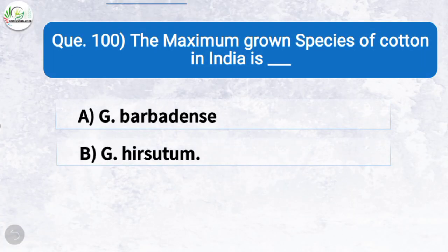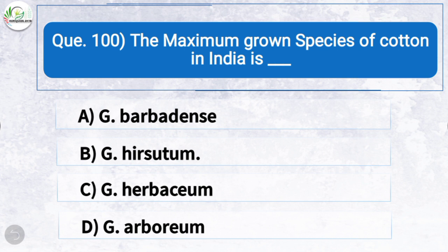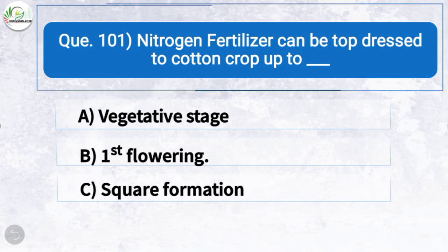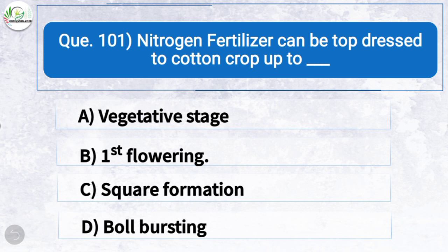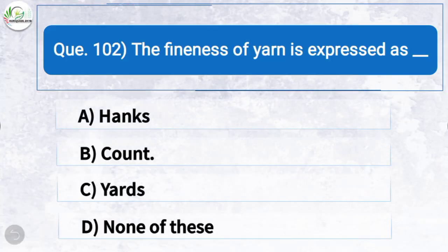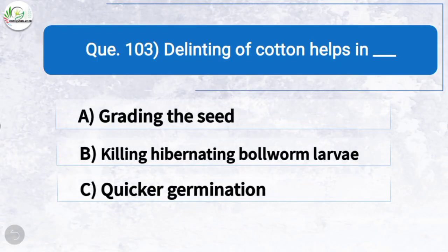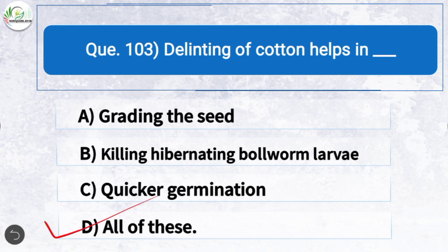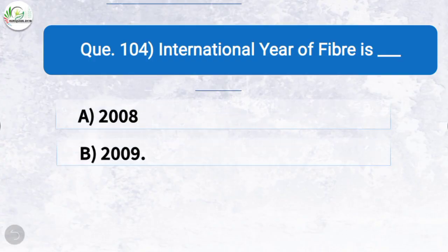Question one hundred: The maximum grown species of cotton in India is — the correct answer is option B: Gossypium hirsutum. Question one hundred and one: Nitrogen fertilizer can be top dressed to cotton crop up to — the correct answer is option B: first flowering. Question one hundred and two: The fineness of yarn is expressed as — the correct answer is option B: count. Question one hundred and three: Delinting of cotton helps in — the correct answer is option D: all of these — grading the seed, killing hibernating ball worm larvae, and quicker germination.